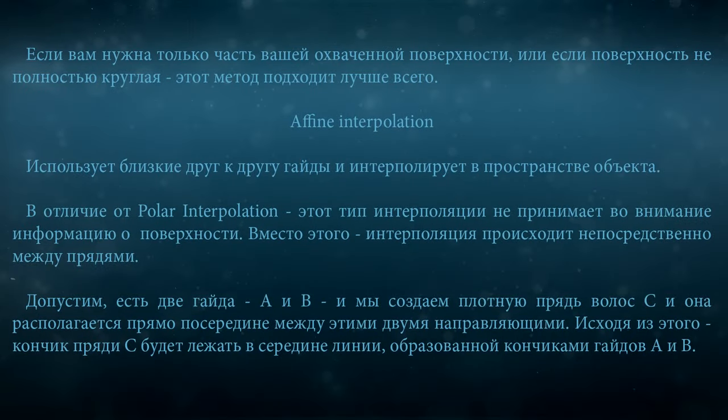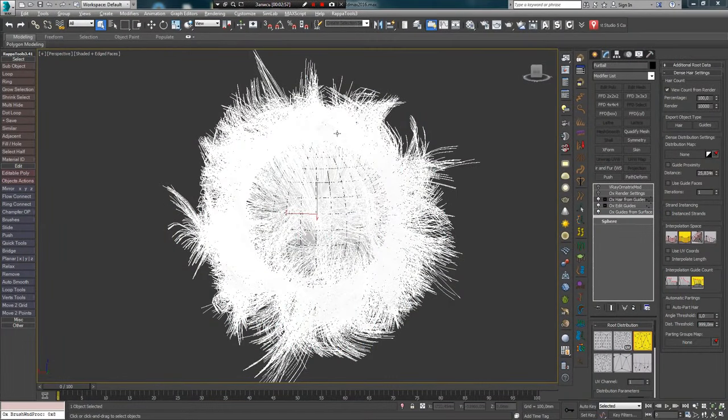If you need only part of your covered surface, or if the surface is not completely round, this method works best. The next interpolation is Affine Interpolation, which uses guides close to each other and interpolates in object space. Unlike Polar Interpolation, this type does not take surface information into account. Instead, interpolation occurs between strands. Suppose there are two guides A and B, and we create a dense hair strand C located right in the middle between A and B. Accordingly, the tip of strand C will lie in the middle of the line formed by the tips of guides A and B. That is how this interpolation works.